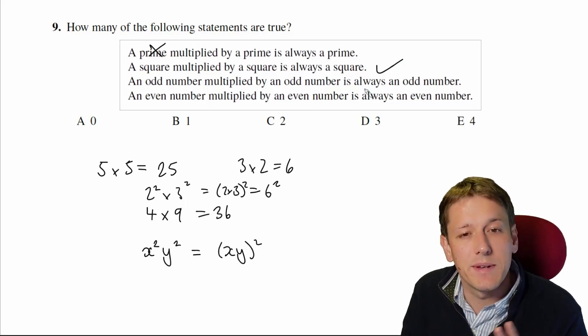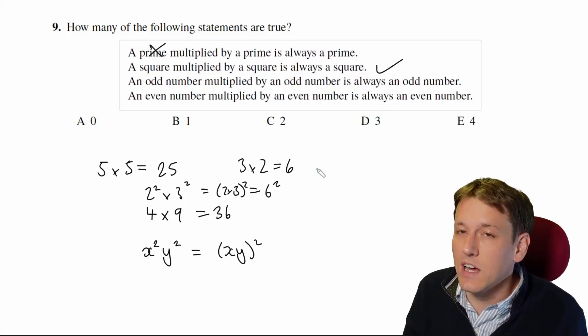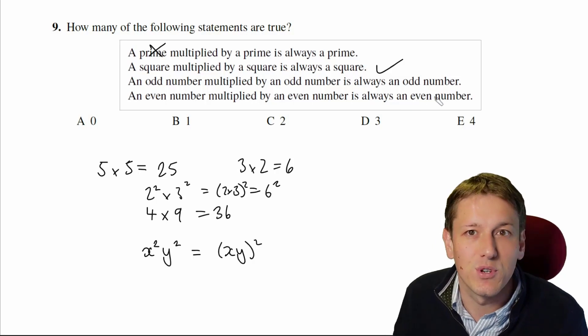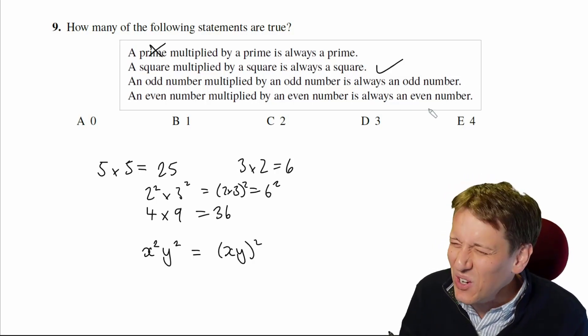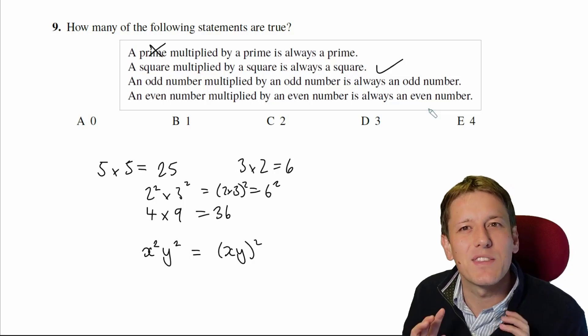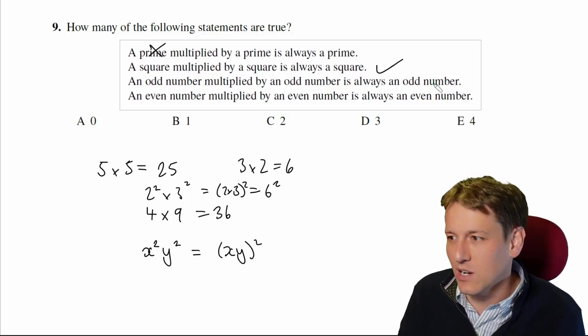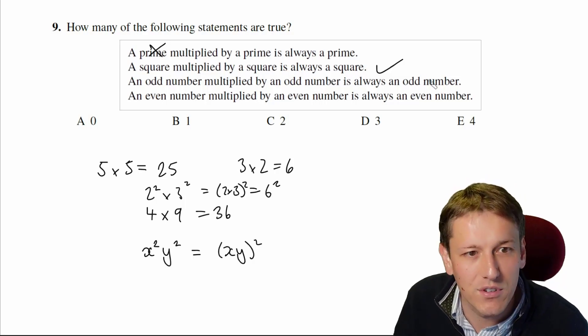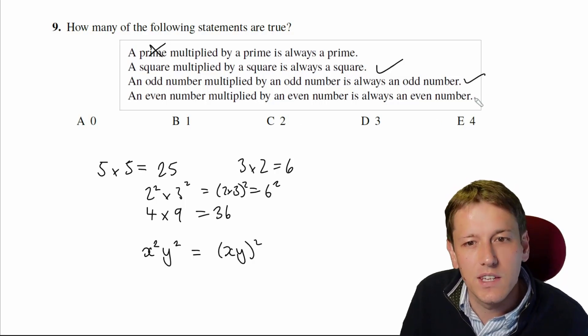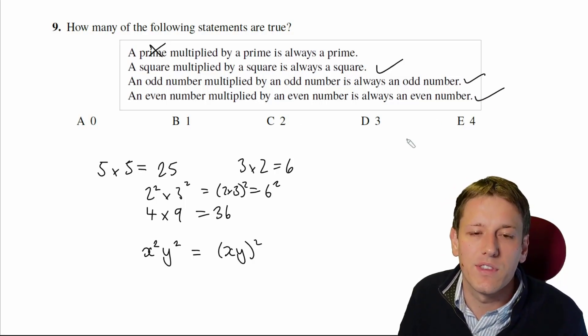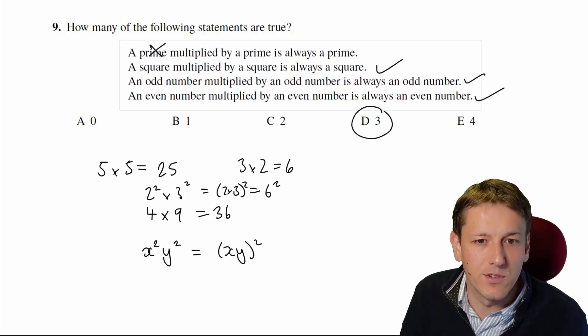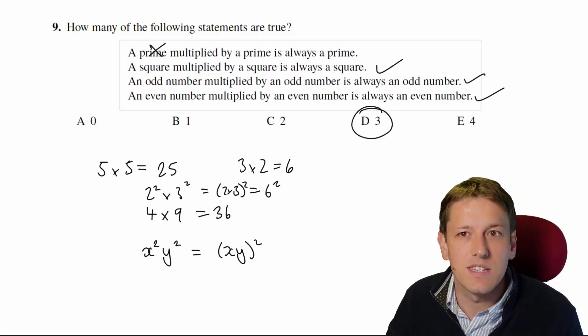An odd number multiplied by an odd number is always an odd number. Yeah, I think we know that's true from our basic experience. You could prove it, but the maths challenge is not the place to be writing out proofs of things that we know to be true. We're under time constraints and we want to just get through this, so odd times odd is odd, even times even is even. They're both definitely true, so 3 out of 4 statements are true, and the answer is D3.